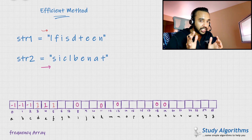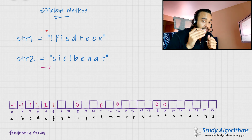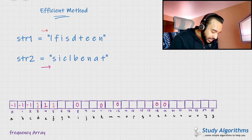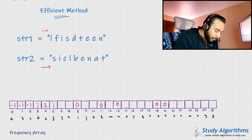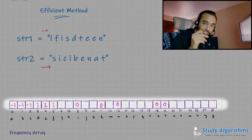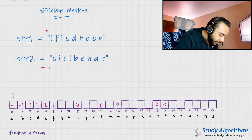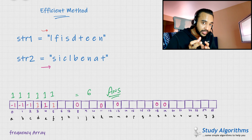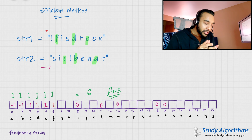Now you have iterated over both of the strings. Just look at the frequency array — this array is now showing you the extra characters that were present in either string one or string two. So as a last step, what you can do is add the modulus of all these values in the array. Taking the modulus, each non-zero value just becomes one, and if you add all of them you get the answer six. This means you will have to delete a total of six characters to make them anagrams. If this solution is now clear to you, let us do a dry run of the code and see how it works.